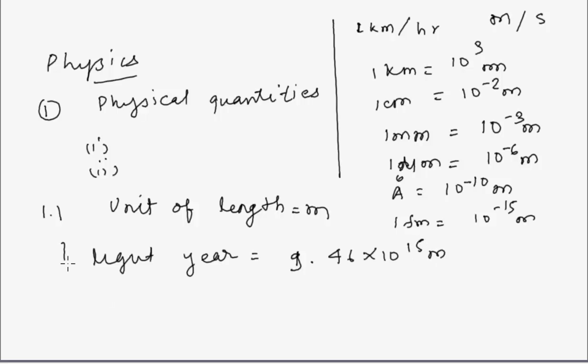Now there are astronomical distances like one light year equals 9.46 into 10 to the power 15 meter. Light year is a unit of length, and one light year equals 9.46 into 10 to the power 15 meter.